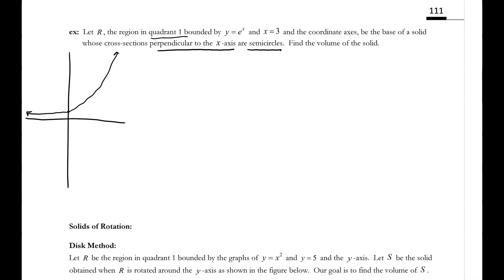That's y equals e to the x. And then remember, x equals 3 is a vertical line. y equals lines are horizontal, so x equals 3 is a vertical line at 3.